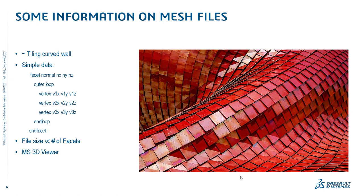The data inside a mesh file — something like an STL, OBJ, or 3MF file — is generally rather simple. You have information related to the normals of the facets, which help you understand what is the internal volume versus an externally facing side of each triangular planar element. Then you have information about the three vertices on the corners of the triangles — vertex 1, vertex 2, vertex 3 — repeating for every facet. File size is proportional to the number of facets and the digits used to define each vertex's X, Y, and Z location.